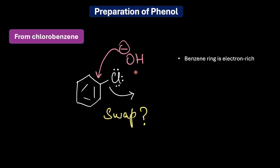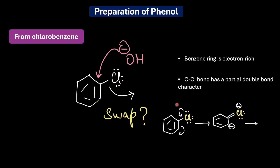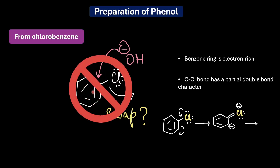The chlorine atom has lone pairs of electrons in conjugation with the π electrons of the benzene ring, and as a result the C–Cl bond gets partial double bond character, making it stronger than a regular C–Cl bond. All in all, the benzene ring is highly stable and aromatic, and this stability makes it highly resistant to nucleophilic substitution reactions.